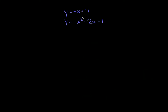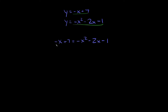Lastly, we have y equals negative x plus 7, and y equals negative x squared minus 2x minus 1. Again, y is equal to both expressions, so we can set them equal: negative x plus 7 equals negative x squared minus 2x minus 1. We want to get everything on one side, so we add x and subtract 7, and this whole left side goes to 0.